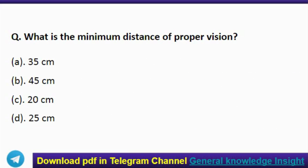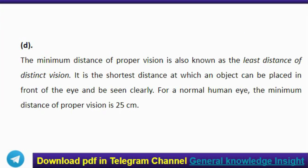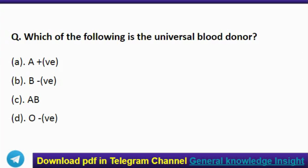The next question: what is the minimum distance of proper vision? The correct answer is option D, 25 centimeters. The minimum distance of proper vision is also known as the least distance of distinct vision. It is the shortest distance at which an object can be placed in front of the eye and be seen clearly. For a normal human eye, this is 25 centimeters.